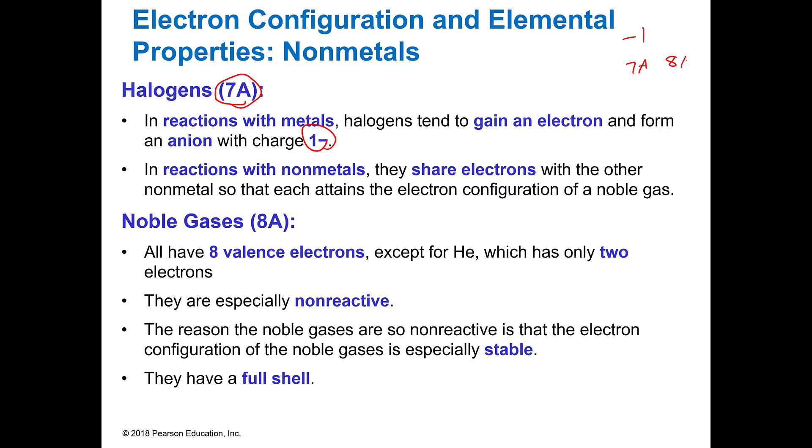And then your 8A group are your noble gases. And the thing about noble gases is they have 8 valence electrons, except for helium which doesn't have that many, which makes them non-reactive because they have a full p-shell. So since they have a full shell they're very stable and they do not really want to get into a reaction.